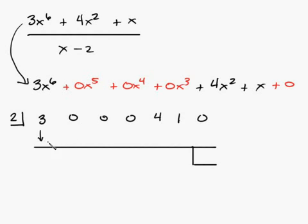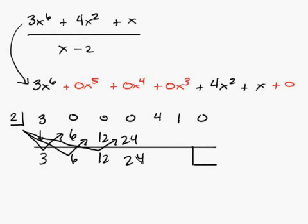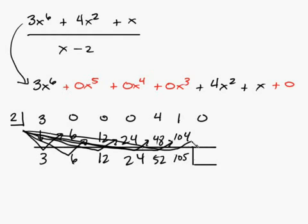Bring down the 3. And 2 times 3 is going to give you 6. And 6 plus 0, add going down, gives you 6. Then you multiply the 2 times the 6 and you get 12. Add going down, 12. 2 times the 12 gives you 24. Add going down, and you get the 24. 2 times 24 gives you a 48. And go ahead and add down, you'll get 52. 2 times 52 is pretty simple. That's going to be a 104. And 104 plus 1 gives you 105. And 2 times 105 gives you 210. And that goes down here.